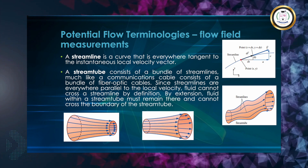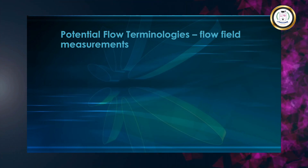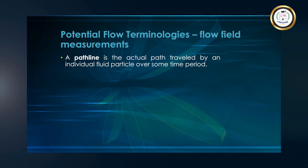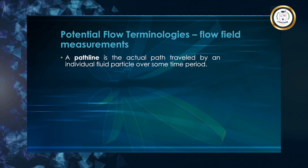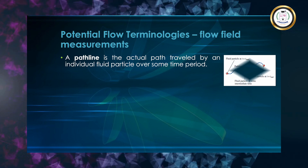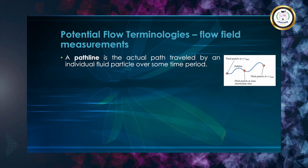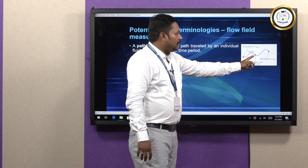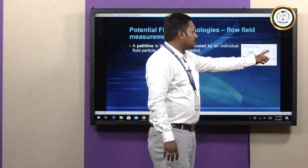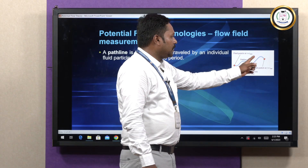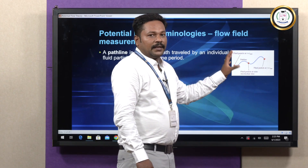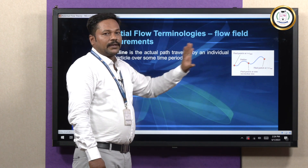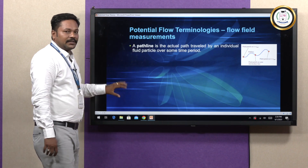What is meant by pathline? Pathline is the actual path traveled by an individual fluid particle over some time period. You consider the fluid particle at this time, and the same fluid particle is tracked on other fields with respect to time. You are just ensuring where exactly the fluid is going — that is called a pathline.